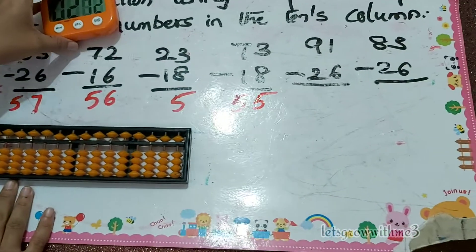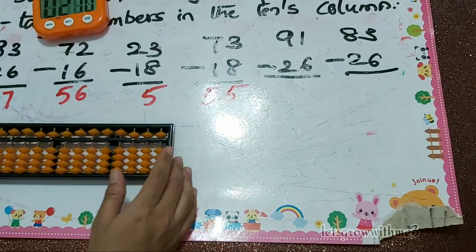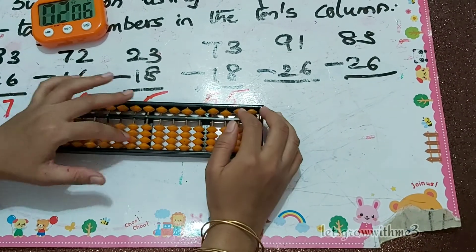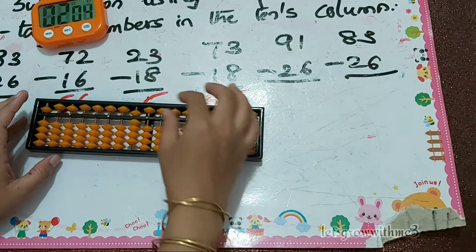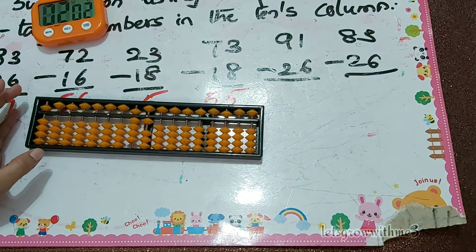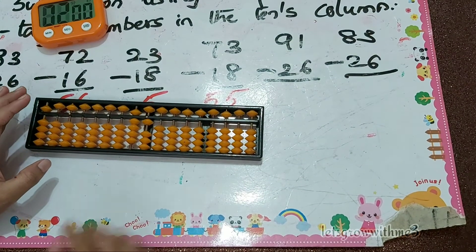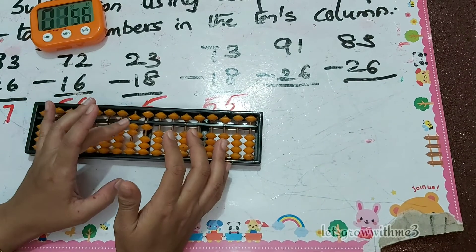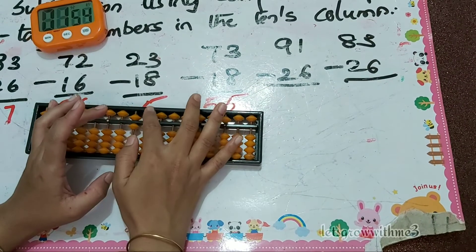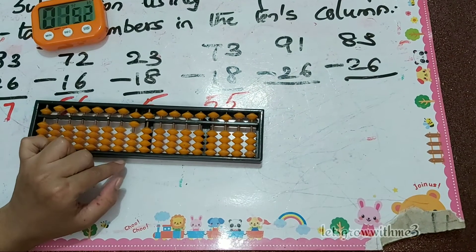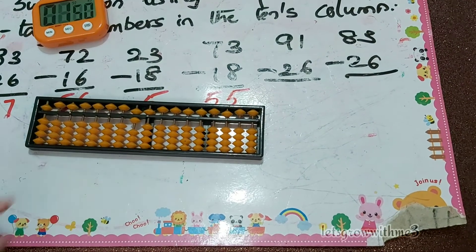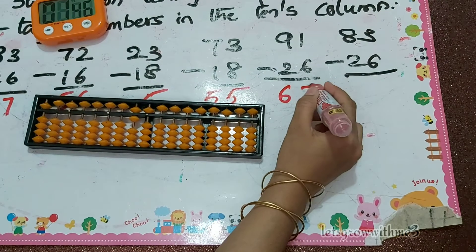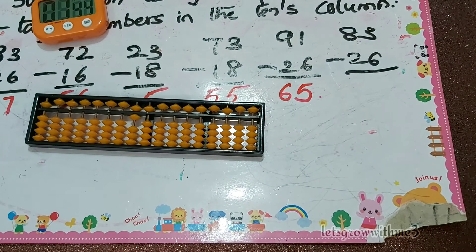Next: 91 minus 26. Minus 2 in the tens column, minus 6 in the ones column. How to do minus 6? Papa down, mama down, baby down. In the ones column you have 5. So the answer is 65.